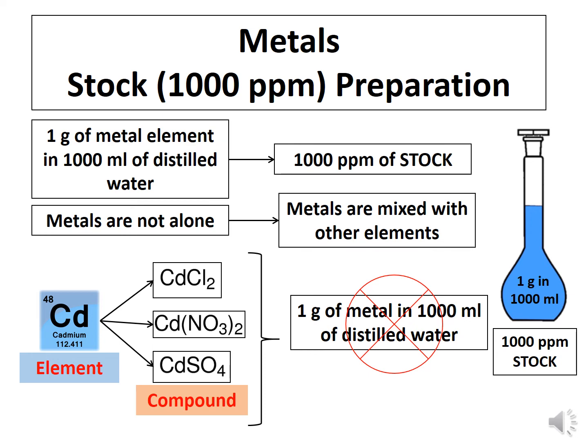Now we are going to study how to prepare a stock solution, that means 1000 ppm of stock solution for various metal compounds. Mixing 1 gram of a metal element in 1 liter of water will give 1000 ppm of stock.